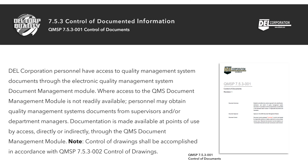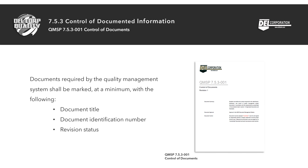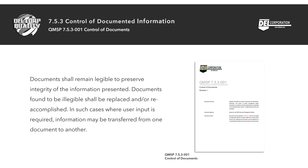Note: control of drawings shall be accomplished in accordance with QMSP 7.5.3-002 Control of Drawings. Documents required by the quality management system shall be marked at a minimum with: document title, document identification number, and revision status. Documents shall remain legible to preserve integrity of the information presented. Documents found to be illegible shall be replaced and/or reaccomplished. In cases where user input is required, information may be transferred from one document to another.